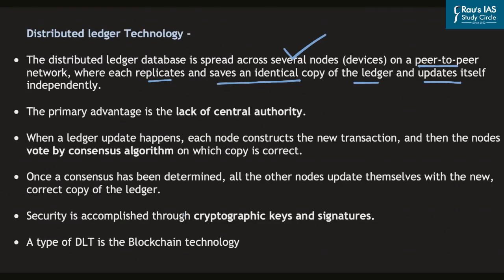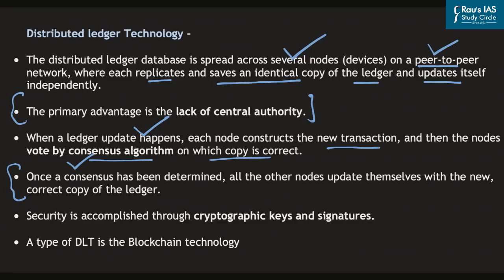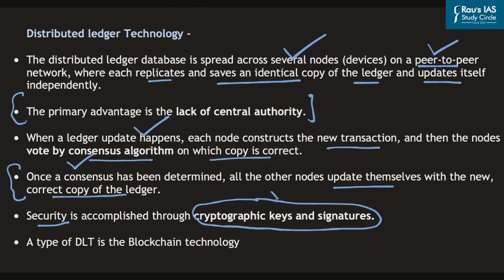The primary advantage of distributed ledger technology is the lack of central authority and its peer-to-peer network. If any change is made at any node, each node constructs the new transaction and the nodes vote by consensus algorithm on which copy is correct. Once consensus is established, all nodes update themselves with the new correct copy of the ledger. Security is established through cryptographic keys or signatures — cryptography is simply a way of encoding information, creating a hash or tag for each piece of data.